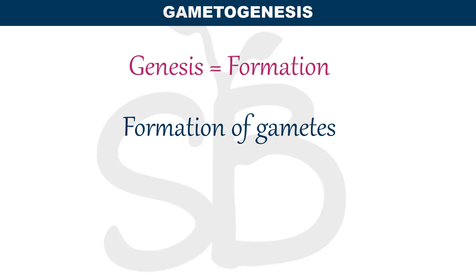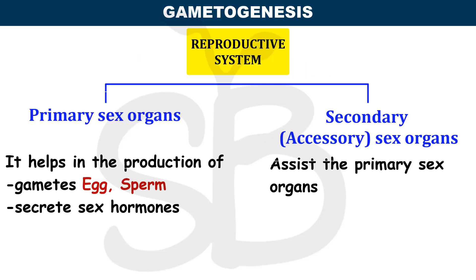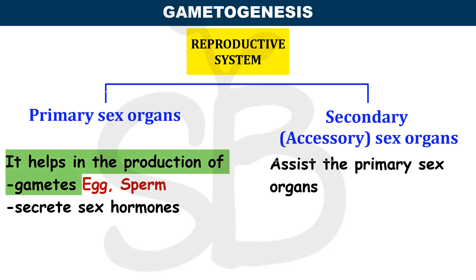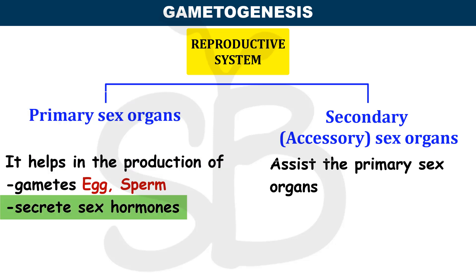Gametogenesis covers the study of the Male and Female Reproductive System, including Primary and Secondary Sex Organs. Gametogenesis is the topic under Primary and Secondary Sex Organs. The primary sex organ function helps in the formation of gametes. It is also responsible for the production of hormones.